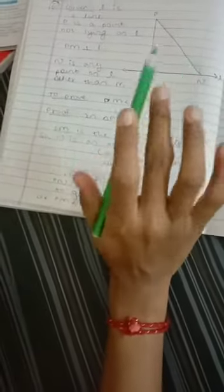So, here of all line segments drawn from the given point not on it, the perpendicular is the shortest, which we proved.